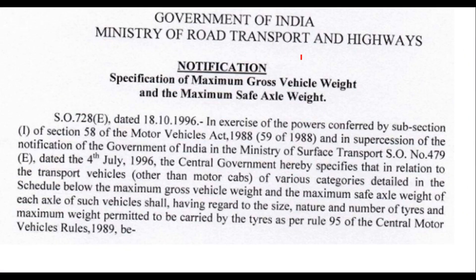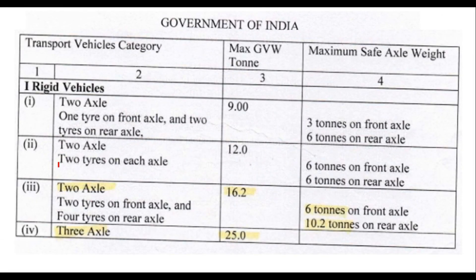The Ministry of Road Transport and Highways in October 1996 issued a notification defining the maximum safe axle weight for each axle of commercial vehicles as per Rule 95 of the Central Motor Vehicle Rules 1989. For a two-axle vehicle where the front axle has a single wheel and the rear axle has two tires — similar to an auto — the front axle carries 3 tons and the rear axle 6 tons, giving a total of 9 tons.